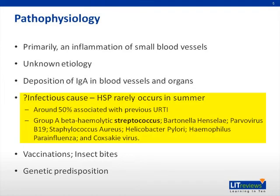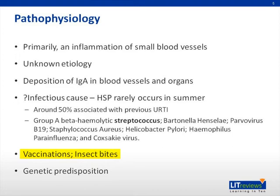Since this is an immunologic process, a number of infectious agents have been suspected to be potential triggers of HSP. The fact that HSP rarely occurs in the summer supports an infectious etiology, since kids tend to get sick in the colder months. Around 50% of cases are associated with a previous upper respiratory tract infection. Several organisms have been implicated, particularly streptococcus. Vaccinations and insect bites are other potential triggers of HSP. A genetic predisposition to developing HSP has also been suggested.